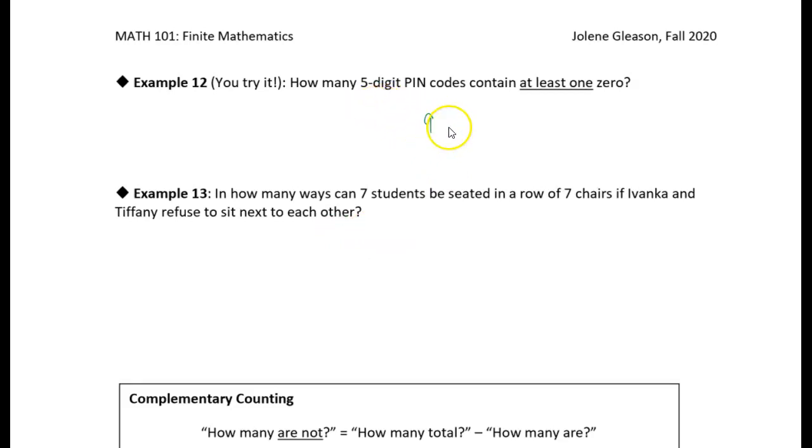So we'd have nine choices for the first digit, nine for the second, nine for the third, nine for the fourth, and nine for the fifth, right? This would be the number of ways that we could create a PIN code with no zeroes.